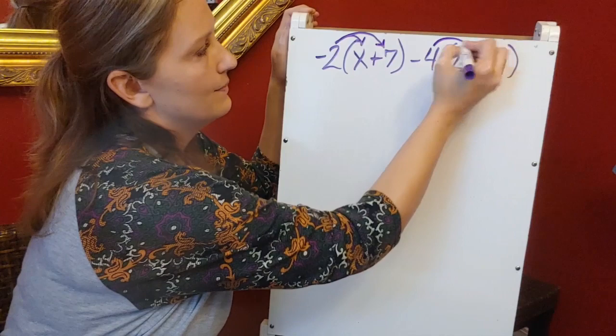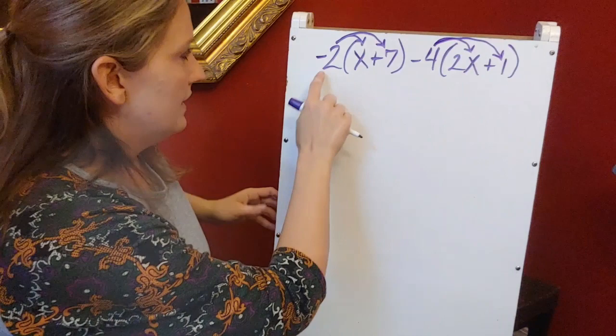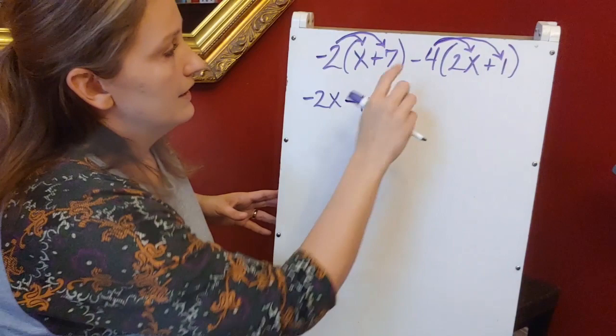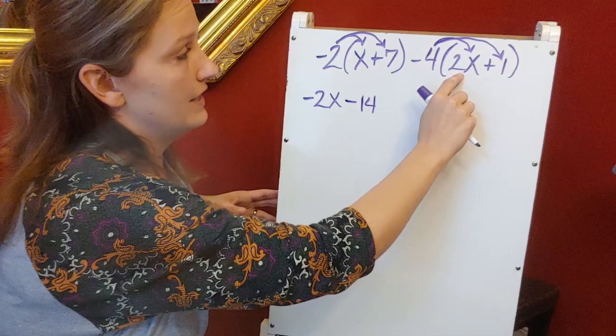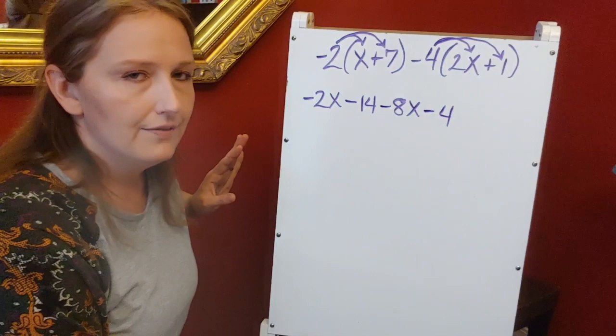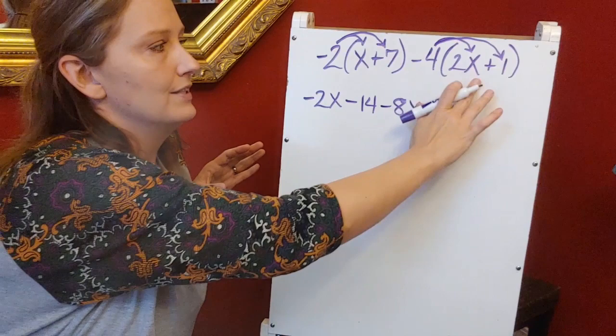So we're going to start off doing that negative 2 times x. It's a negative 2x. A negative 2 times a positive 7 gives me minus 14. Now I'm going to keep writing in the same line. Negative 4 times 2x is minus 8x and negative 4 times 1 is minus 4. So all I've done is distributed that negative 2 to the first set of parentheses, that negative 4 to the second set of parentheses, and then I'm going to combine like terms.